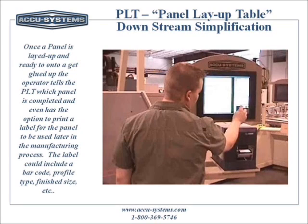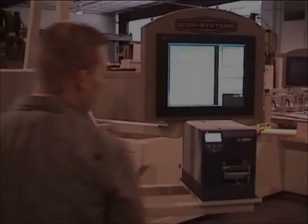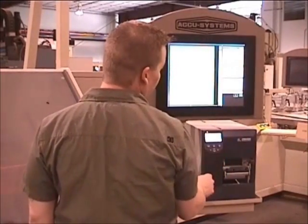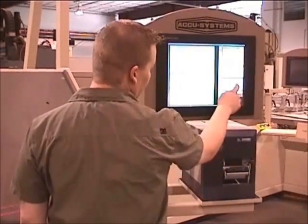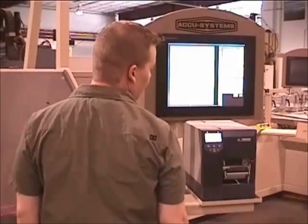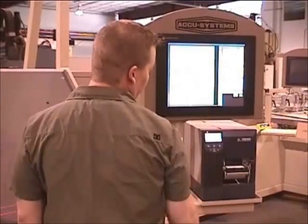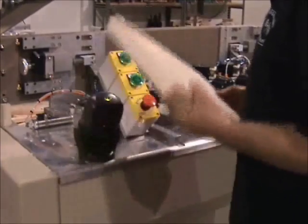Once panel staves are combined, the operator tells the software that the panel is completed. The panel is then removed from the open order list. If the PLT is equipped with the optional label printer, the label will automatically print. The software can also be upgraded to be capable of bi-directional communication, so that the office can be constantly updating the open order list with new orders and monitor which panels have gone onto panel glue-up.